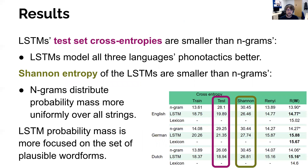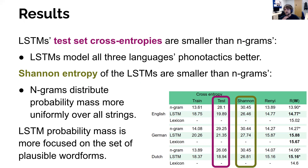Going into our results, the LSTM test set cross-entropies are smaller than the N-grams in all languages, which means the LSTM models the phonotactic distribution better. If we look at the Shannon entropy, on the other hand, the LSTMs are smaller than the N-grams, which means the N-grams distribute the probability mass more uniformly over all strings. Taken together, the LSTM probability mass seems to be more focused on the side of possible strings, while the N-grams are more smoothed over all strings.